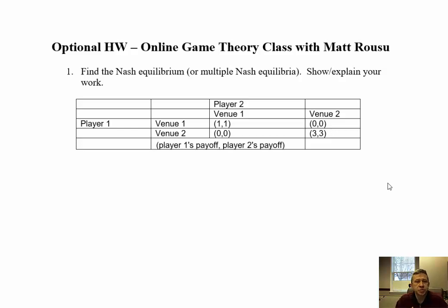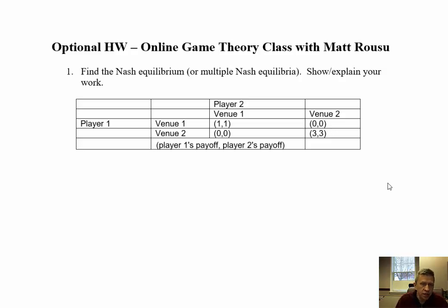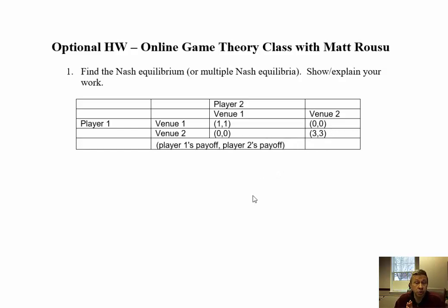The first question was: find the Nash Equilibrium or multiple Nash Equilibria in this two-player game. You have two players, and each can choose a strategy of going to venue one or venue two. If they go to different venues, they get a payoff of zero. If they both end up at the same venue, both payoffs are positive. Find the Nash Equilibrium or multiple Nash Equilibria of this game.